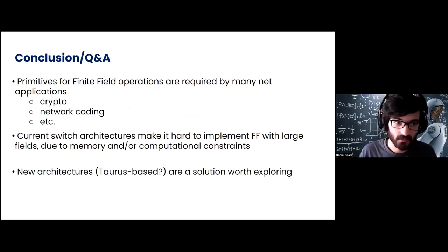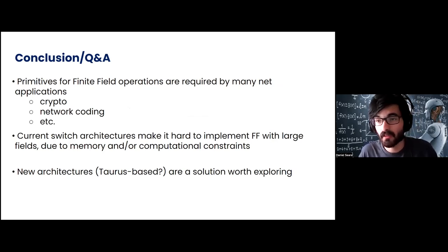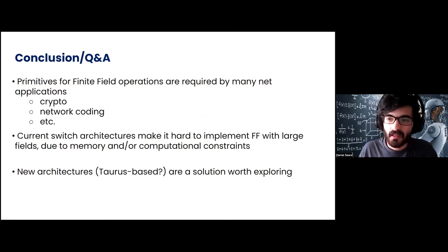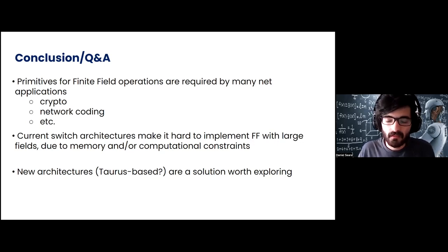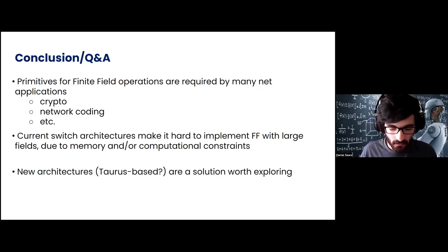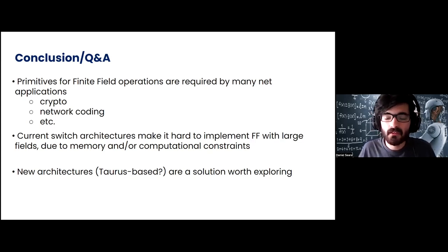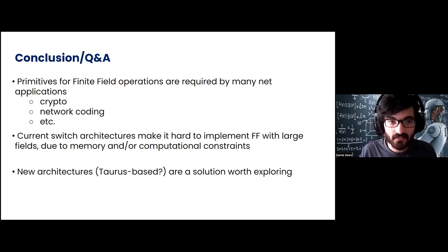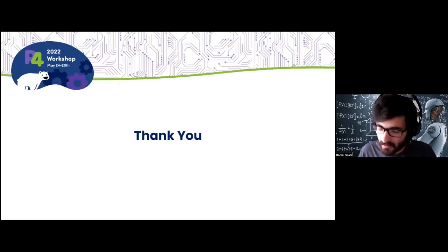To conclude, we have seen that primitives for finite field operations are required by many networking applications — either cryptography, network coding, or others — and that current switch architectures make it very hard to implement these operations for larger fields, due to memory or computational constraints. Maybe these new architectures, possibly Taurus-based, are a solution worth exploring. We now open the floor to your questions. Thank you very much.